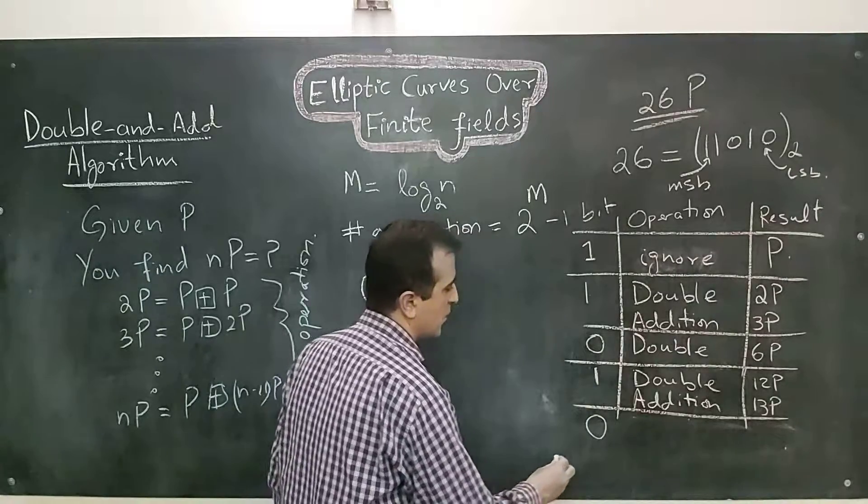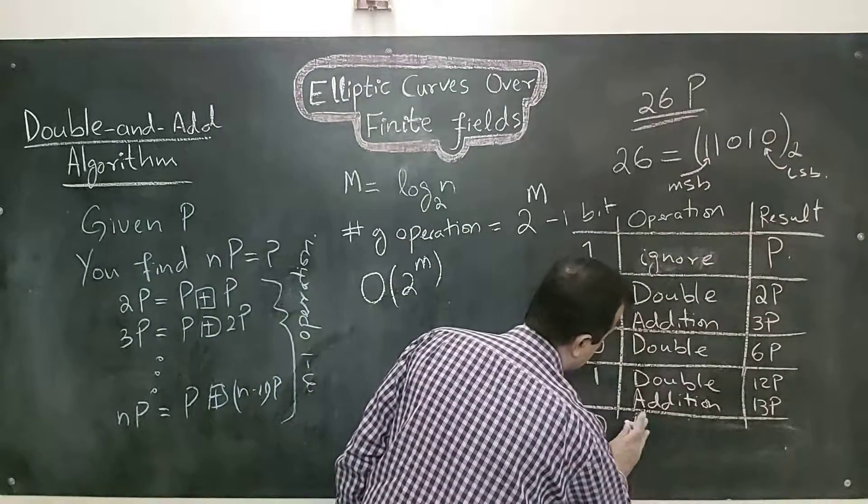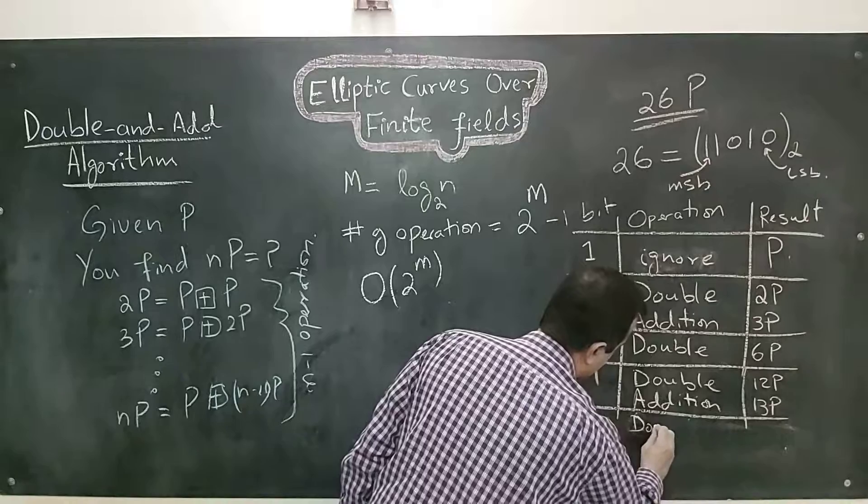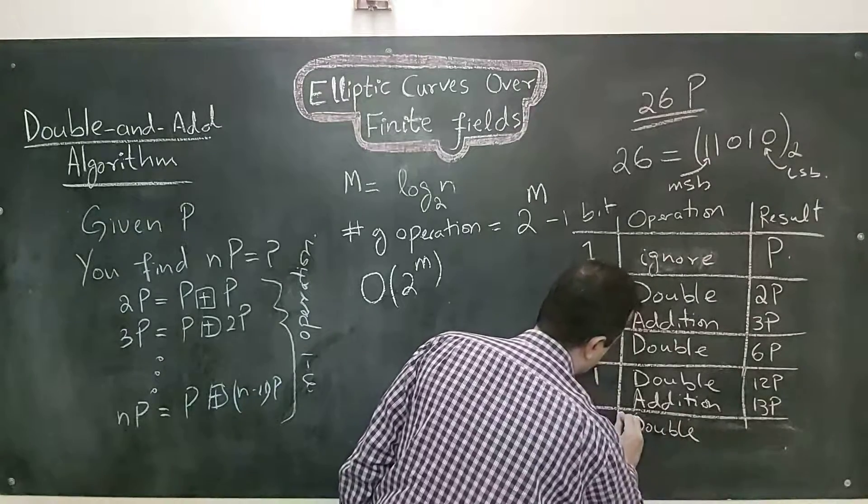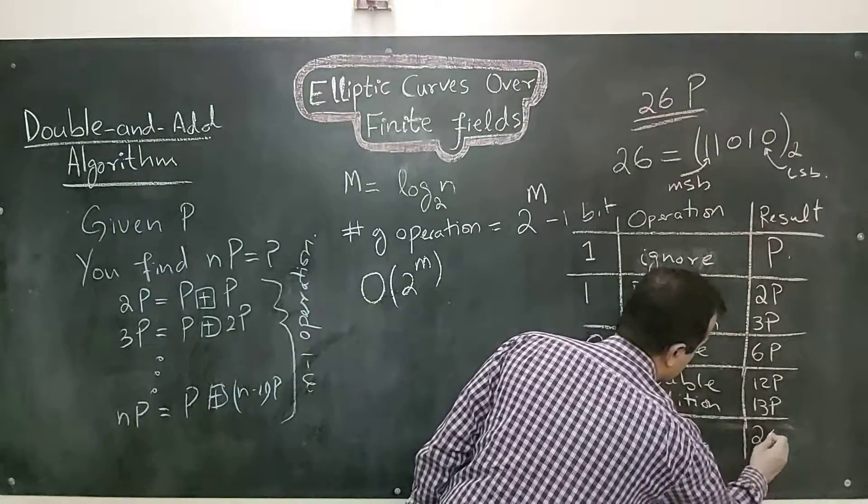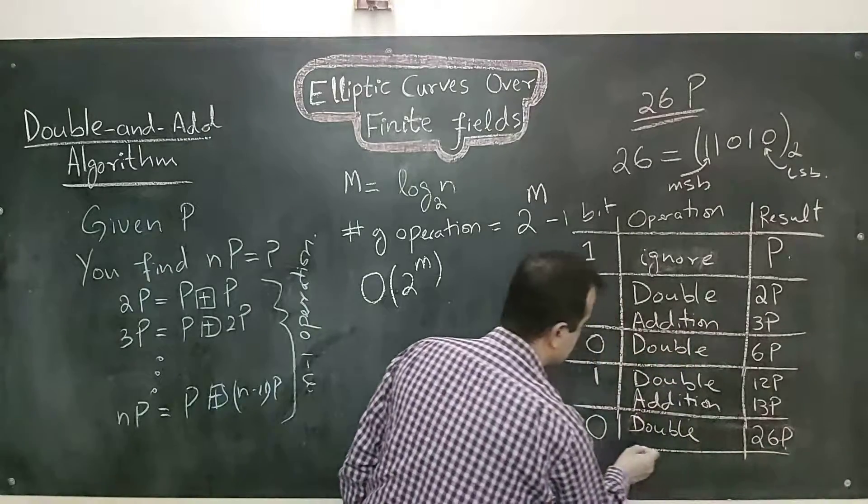And the last bit is 0. For 0, I will only perform a point doubling operation. And voila! I have 26P.